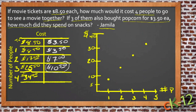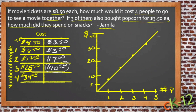We can use that information not only to show how much it costs to get tickets for those people, but to predict what it would cost for more people. We can see that five tickets would probably be just about $40, maybe a little more — around $42.